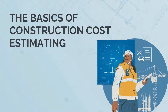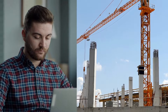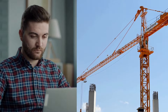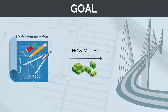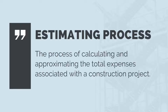Let's start off by understanding what construction cost estimating is. By understanding what it is, it will be easier to move on to explaining what an estimator does and what type of people should become estimators. At its most basic, the goal of construction estimating is to work out how much it costs to transform a set of drawings, specifications and requirements into a finished product. We want to calculate a dollar figure to turn a set of drawings into a reality. The estimating process is the process of calculating and approximating the total expenses associated with a construction project.